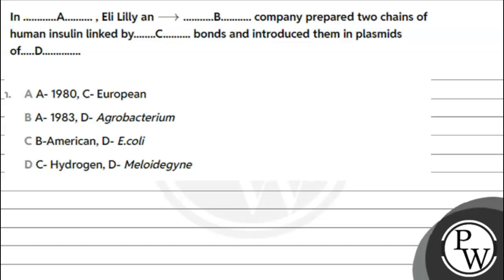It says, in Dash, L-I-U-L-E and Dash, company prepared two chains of human insulin linked by Dash bonds and introduced them in plasmids of Dash.